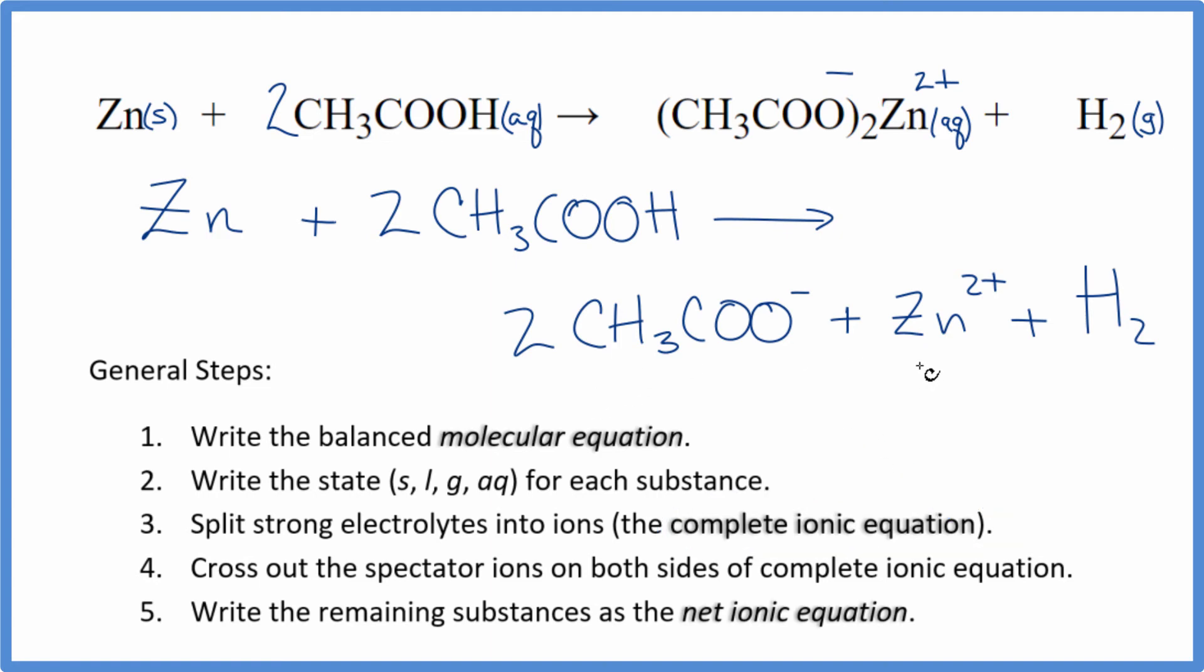Now we can cross out spectator ions. They're ions that are on both sides of the complete ionic equation. As we look at the equation, we don't have any substances that are the same in the reactants and the products. Everything's different. Zinc metal, this is a zinc ion, very different. Here we have two acetic acid molecules. Here we have two acetate ions. So everything is different. That means that this complete ionic equation, it's also the net ionic equation.